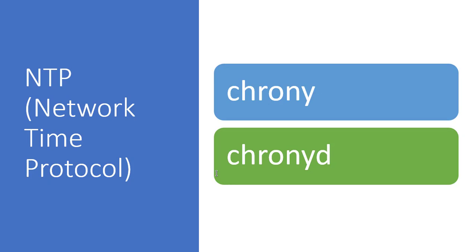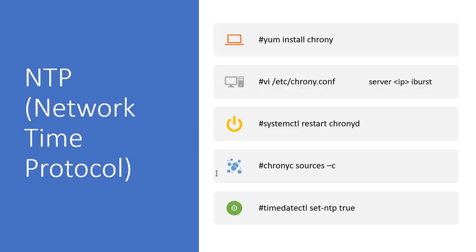We need to install the chrony package if it is not already there. The configuration file path is /etc/chrony.conf. Once you open that file you need to make one change: write 'server' followed by whatever IP is given in the question, then a space and 'iburst'. Whenever you change anything in the configuration file you have to restart the service using systemctl restart chronyd.